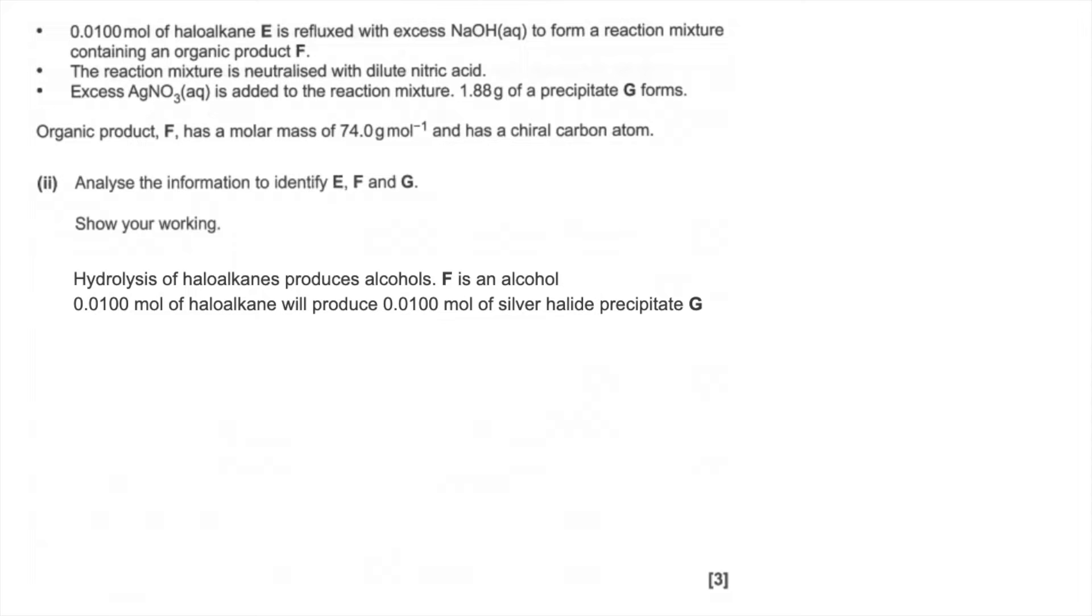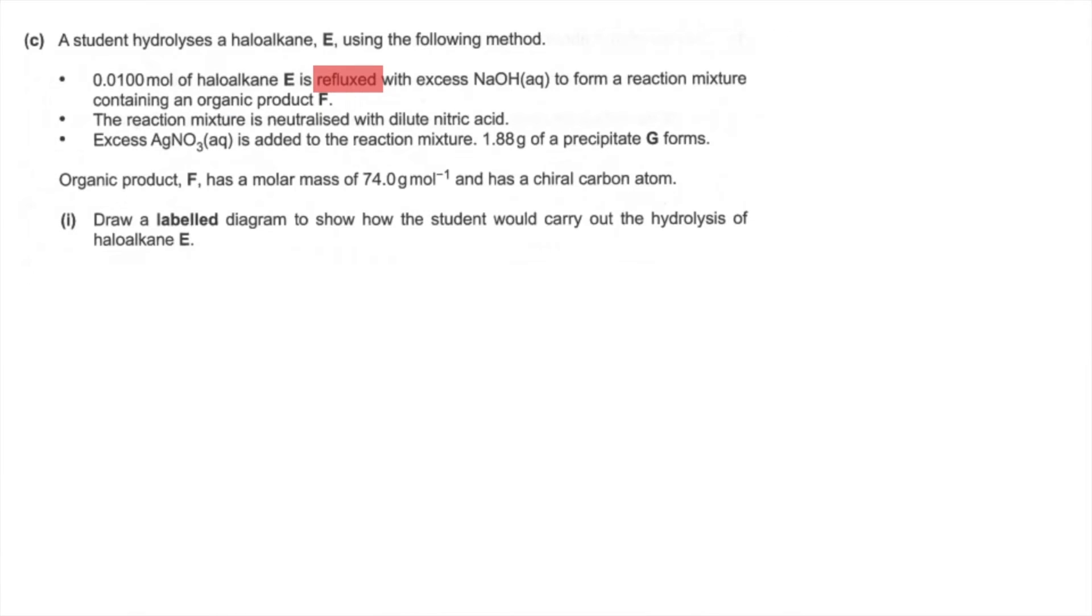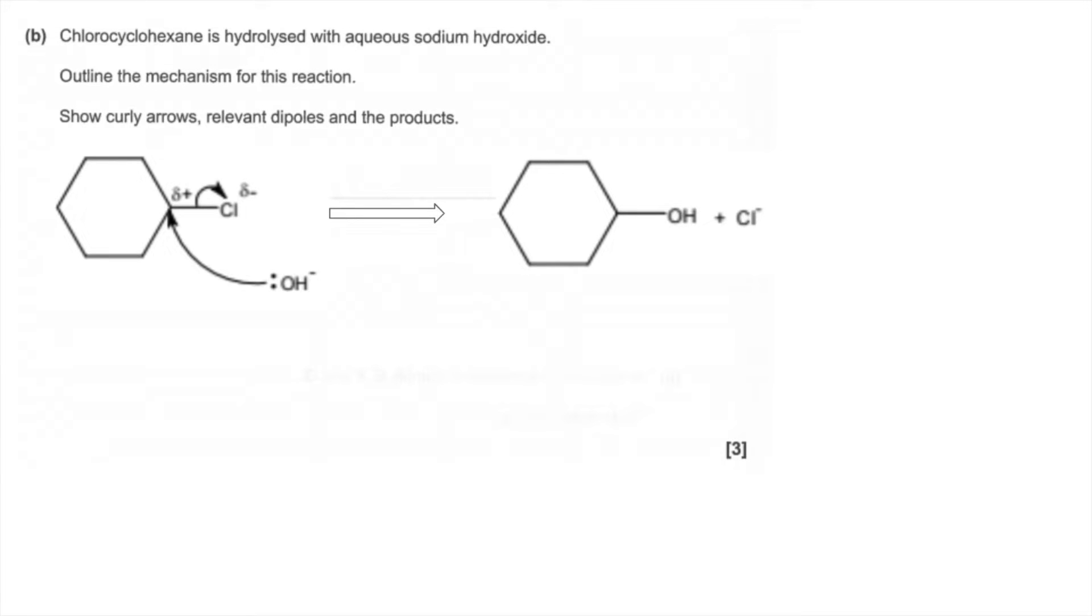So when you hydrolyze 0.0100 moles of haloalkane, it's going to make 0.0100 moles of silver halide precipitate. That's because, if I just go, I'm going to have to go back a few slides. If you think about the hydrolysis of this one here.